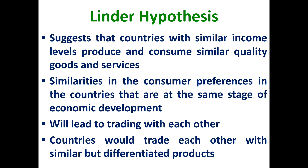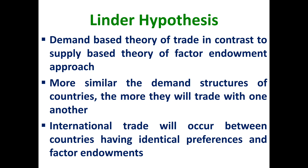Countries would trade with each other in similar but differentiated products, and this trade pattern will be governed by intra-industry trade. It is a demand-based theory when compared to the factor endowment approach, which is a supply-based theory. Linder argues that countries with similar demand structures are more likely to trade with each other, and international trade will be more among countries having identical preferences and factor endowment, which is obviously against the Heckscher-Ohlin prediction.